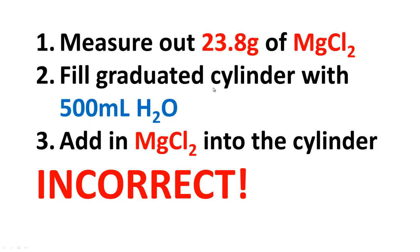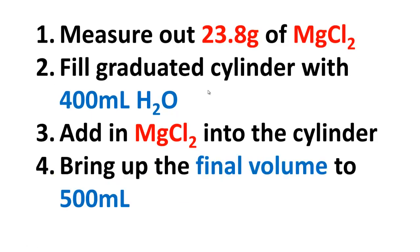Now, if you think this seems quite insignificant, remember that a good scientist is a careful scientist. So the proper way of doing this is that you want to take the 23.8 grams of magnesium chloride and maybe only 400 mL of water, for example. You can use maybe 450 or 300, something less than 500.